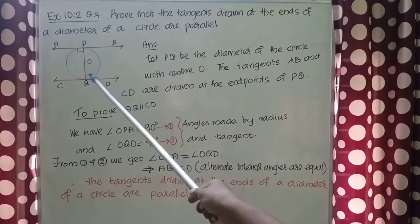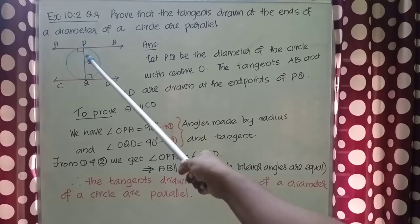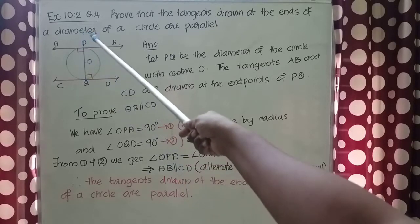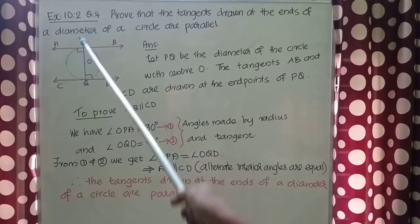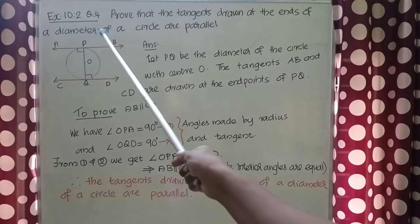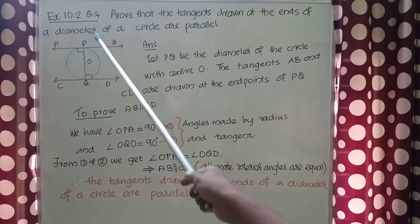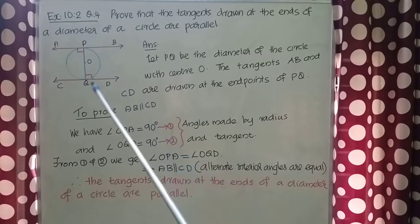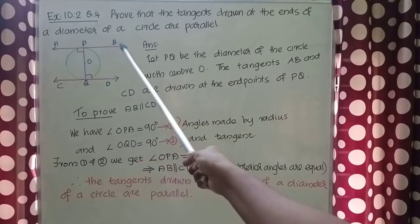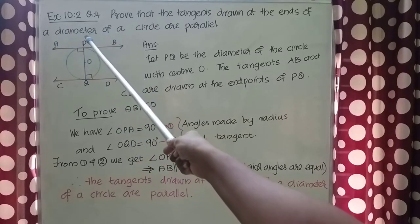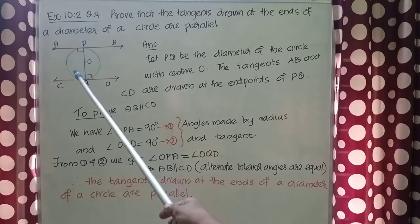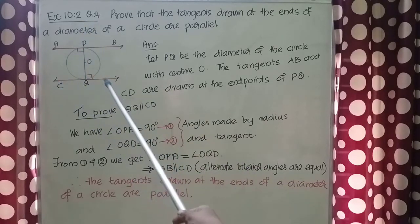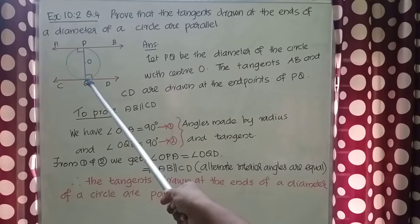Here I have drawn a circle with center O and a diameter PQ. I have drawn two tangents at the endpoints of the diameter. AB is drawn at the point P and CD is drawn at the point Q.